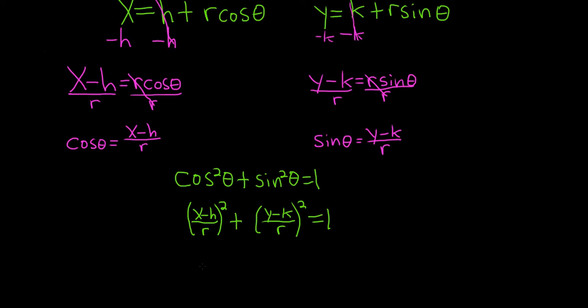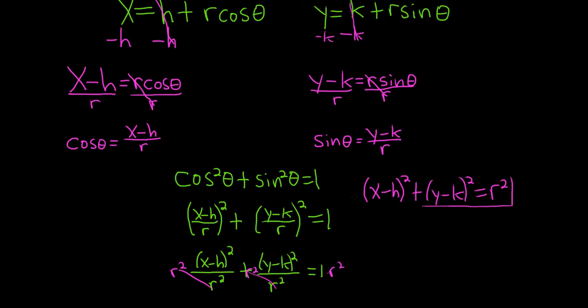We have a fraction and it's being squared. So we can square both the numerator and the denominator. So that'll give us that. And over here, same thing, we have y minus k squared over r squared. And this is all equal to 1. The last thing maybe to do is multiply by r squared. And we end up with the equation of a circle. So x minus h squared plus y minus k squared equals r squared. This is the rectangular equation of a circle. This is the equation of a circle with center hk and with radius r.